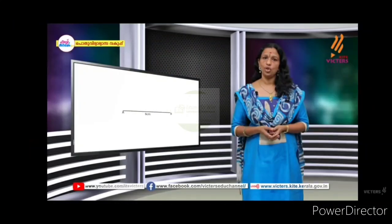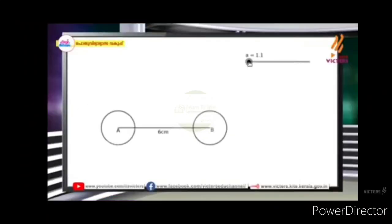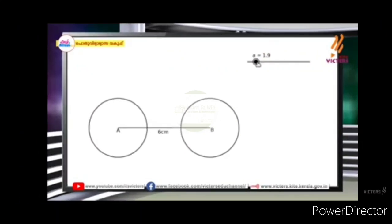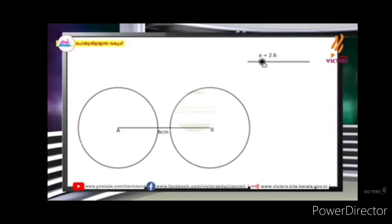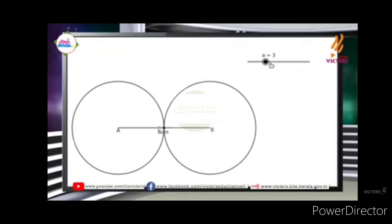First, we have a line AB. It is 6 cm. This is a circle. The radius changes — it changes to 1.1 cm. These are 1.9 cm, and this will be 1.9 cm. This is impossible to replace at 2.6 cm. A circle is 2.6 cm.